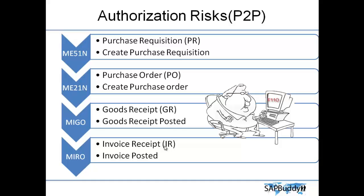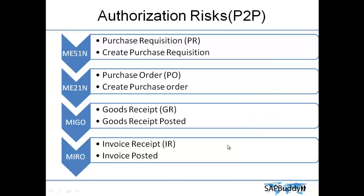The user then runs transaction F110 and executes the payment run. The fraudulent bank account or vendor receives the money, but there are no actual goods inside the company. This demonstrates how, without any real goods, a large fraudulent transaction can easily be made if all these authorizations are held by one person — which is why SOD controls are critical.